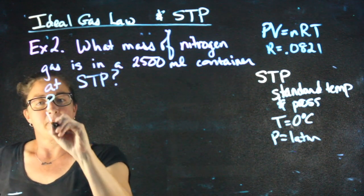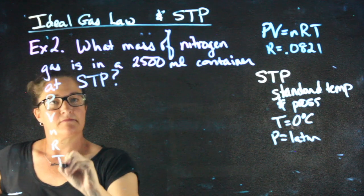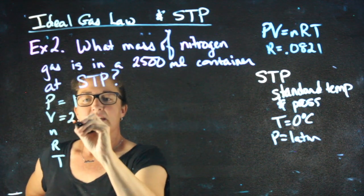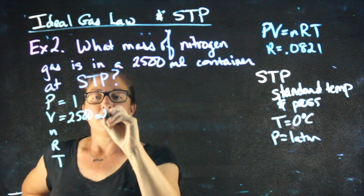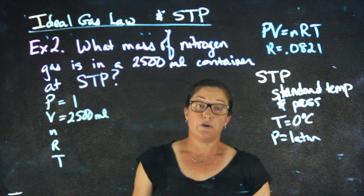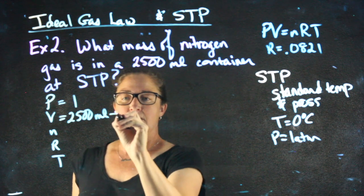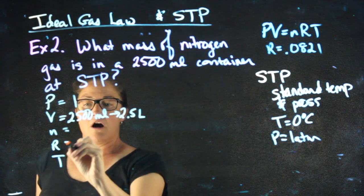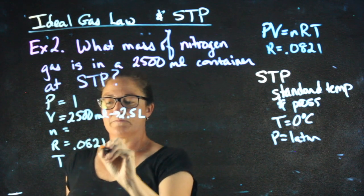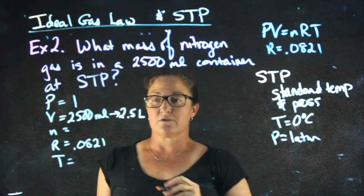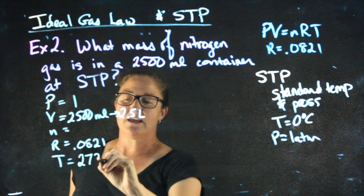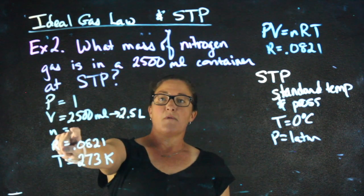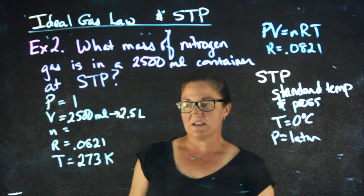So for this problem, pressure is 1, volume is 2,500 milliliters. Is that in the units I need it? No, I need to convert it to liters. R is 0.0821 and the temperature is 0 degrees Celsius, which is 273 Kelvin. I have enough information to solve for moles. And if I can get moles, I can then get the grams of N2.